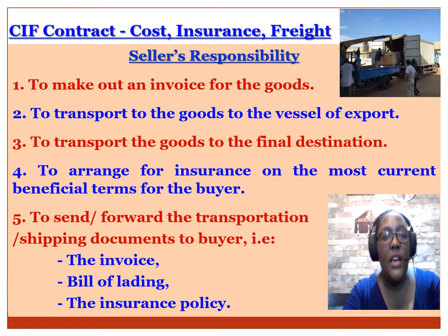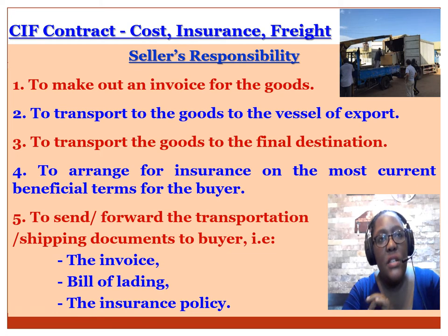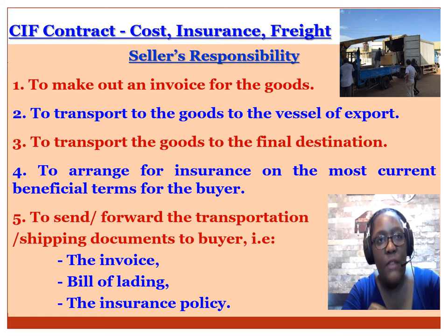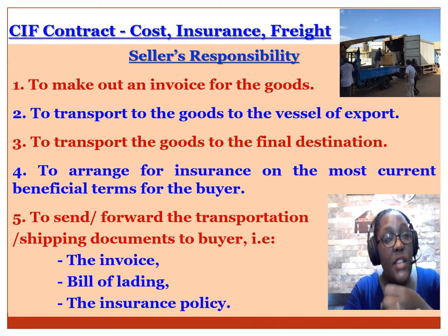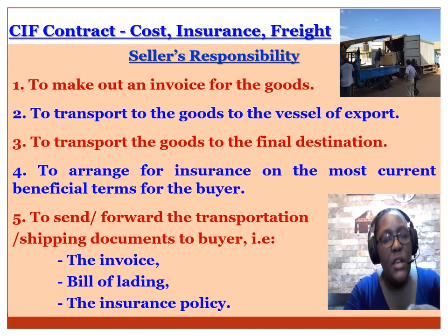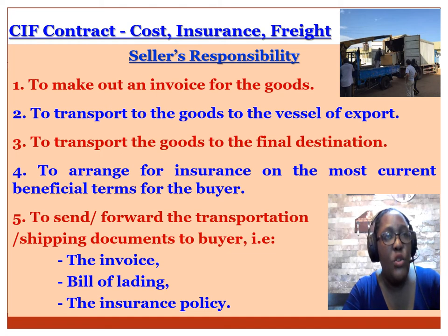We'll start with the CIF contract. CIF stands for Cost, Insurance and Freight. For example, if you're importing tiles from China and the seller tells you that you're going to pay 40,000 shillings CIF Mombasa, that package price includes: the cost of the tiles themselves, insuring the tiles as they come to Uganda, and the freight or transportation cost. CIF Mombasa means the price you pay as the buyer covers cost, insurance, and freight.